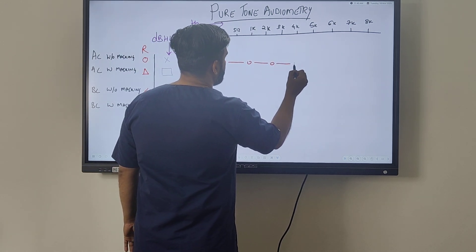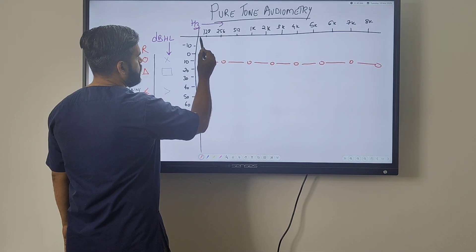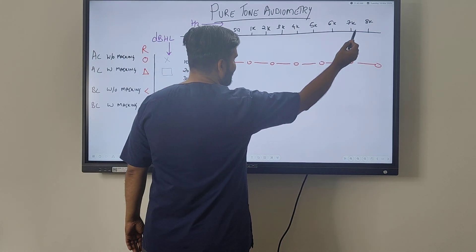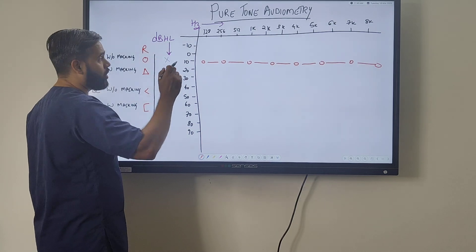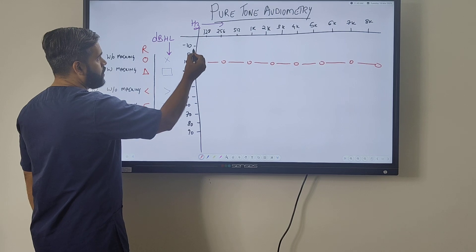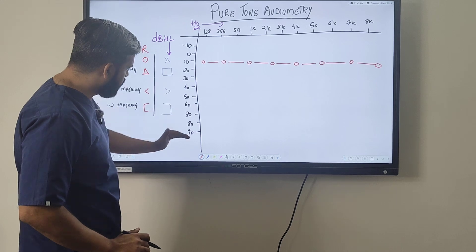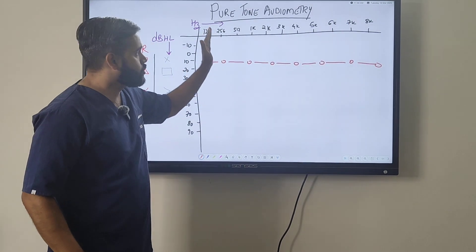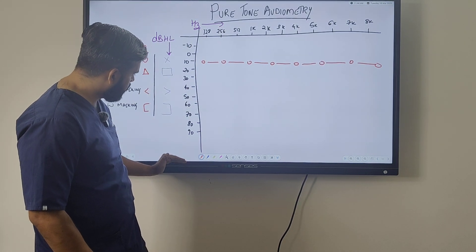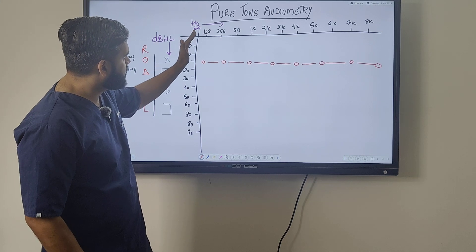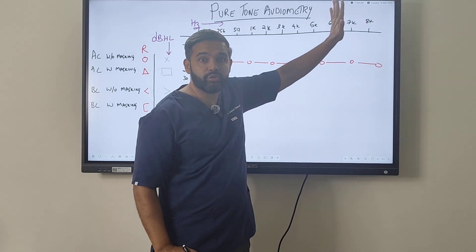The graph plots frequencies going from low to high frequency on the horizontal axis, and volume in decibel hearing level — not decibel hearing loss — going from low to high volume on the vertical axis. The pitch is on the horizontal axis and the volume in decibels hearing level is on the vertical axis, ranging from low frequency 128 Hz to 8000 Hz on the high frequency end.